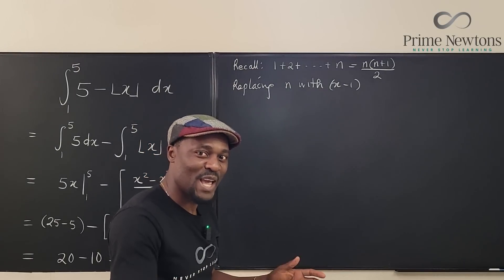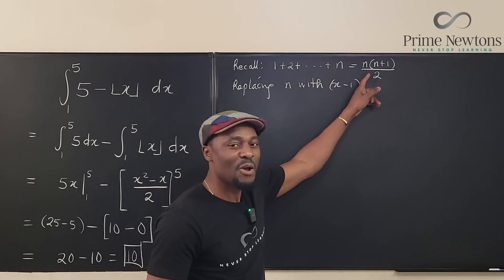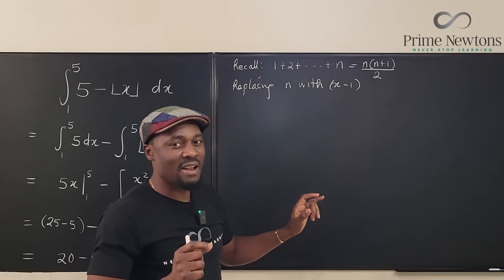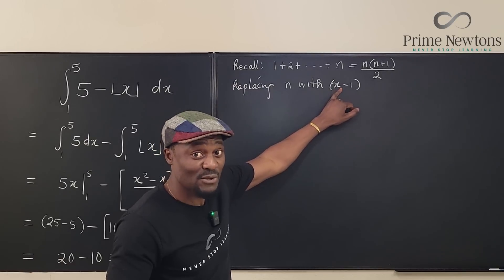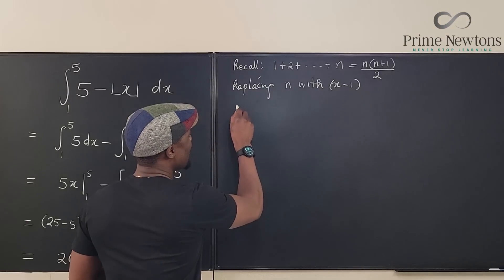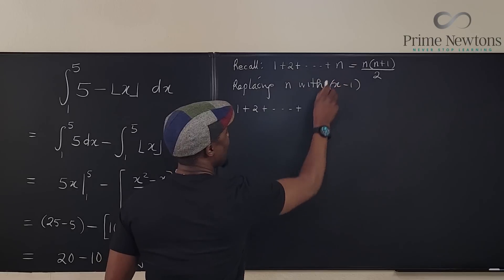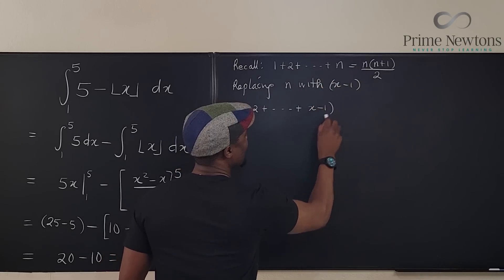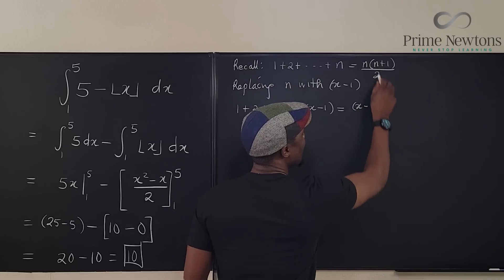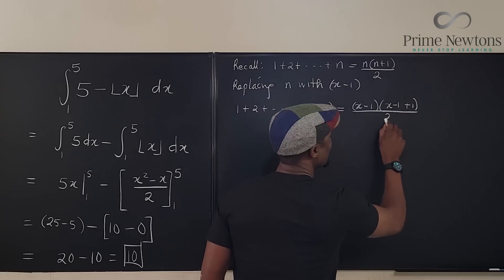Remember that every time we do integration we're adding up strips of areas — the first area, then the second, and so on. But we're not going to get n areas; we'll get n minus 1 areas, represented as x minus 1. So: 1 plus 2 plus … plus (x minus 1).